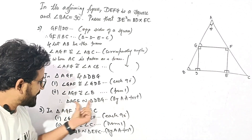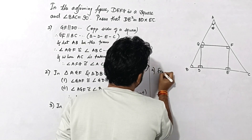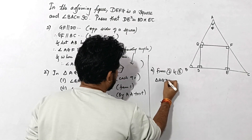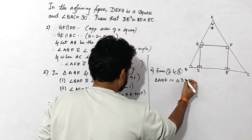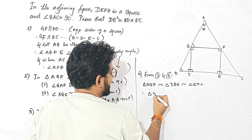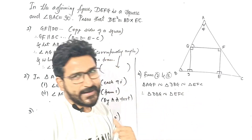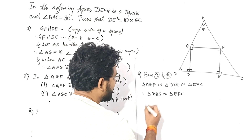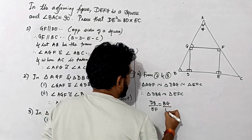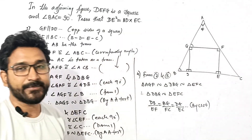So AGF is similar to triangle DBG and AGF is also similar to triangle EFC. So obviously these two triangles are similar to each other. Therefore, from steps 2 and 3, we can say that these three triangles are similar. Therefore triangle DBG is similar to triangle EFC. Since all sides of similar triangles are proportional: DB upon EF equals BG upon FC equals DG upon EC — this is by CSST, corresponding sides of similar triangles.